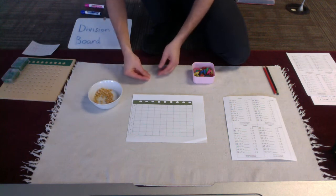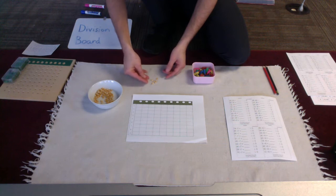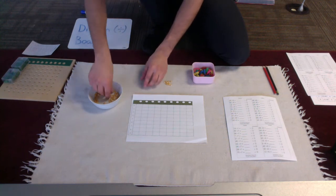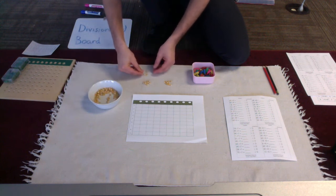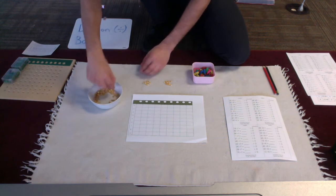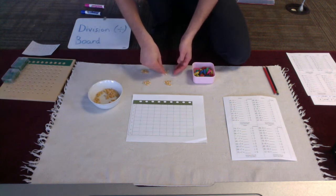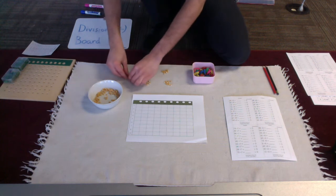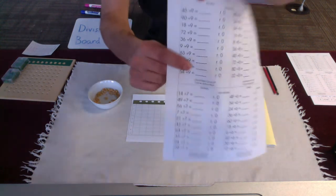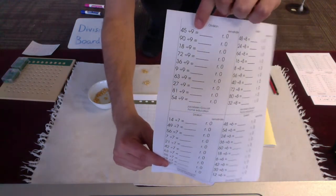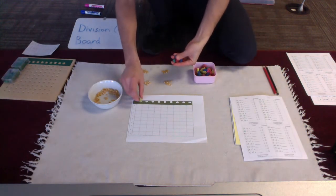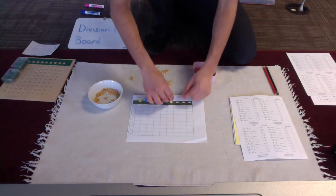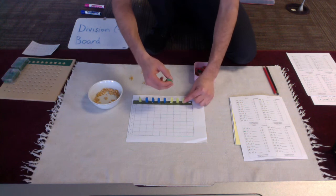So, I'm going to count out 45 popcorn kernels. [Counts and groups in tens]. 10, 20, 30, 40, and 5 more. All right, so there's my dividend of 45. And my divisor is going to be, right here, 9. So, I'll use 9 erasers. [Counts to 9].